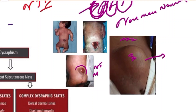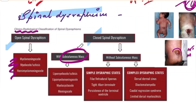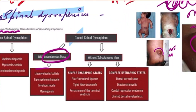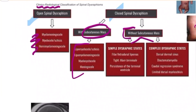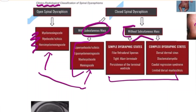Once we identify whether a lesion is open or closed, we have differentials in mind. For open lesions, the differentials are myelomeningocele, myelocele or myelocystis, hemi-myelomeningocele, and hemi-myelocele. For closed lesions with an intact skin, we consider whether there is a subcutaneous mass or not, and classify further into simple or complex dysraphic states. In part one, we'll cover the open forms and closed variety with subcutaneous mass.